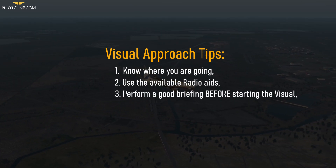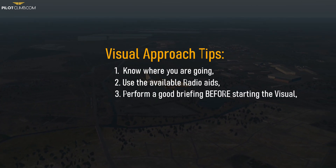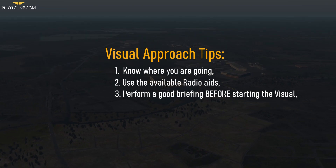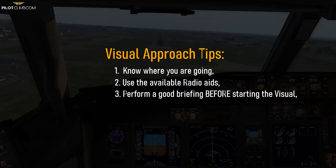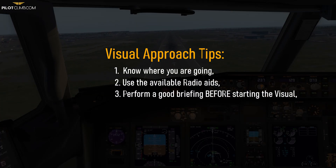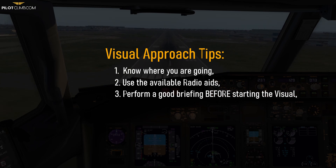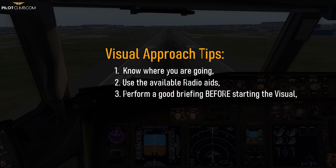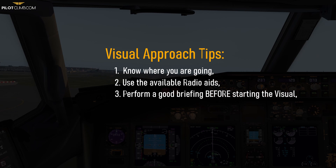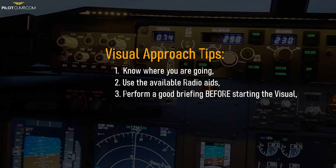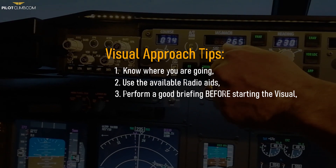The third piece of advice is: perform a good briefing before starting the approach. This will prepare you well. Many pilots decide to start the visual approach when on downwind because they have a great view and think it's a great idea, but unfortunately they are not ready — they are too high or too fast. So they disconnect the automatics and dive into the final, which in many cases ends up in a high-energy scenario. Make sure you are at the right altitude and speed before starting the visual approach.